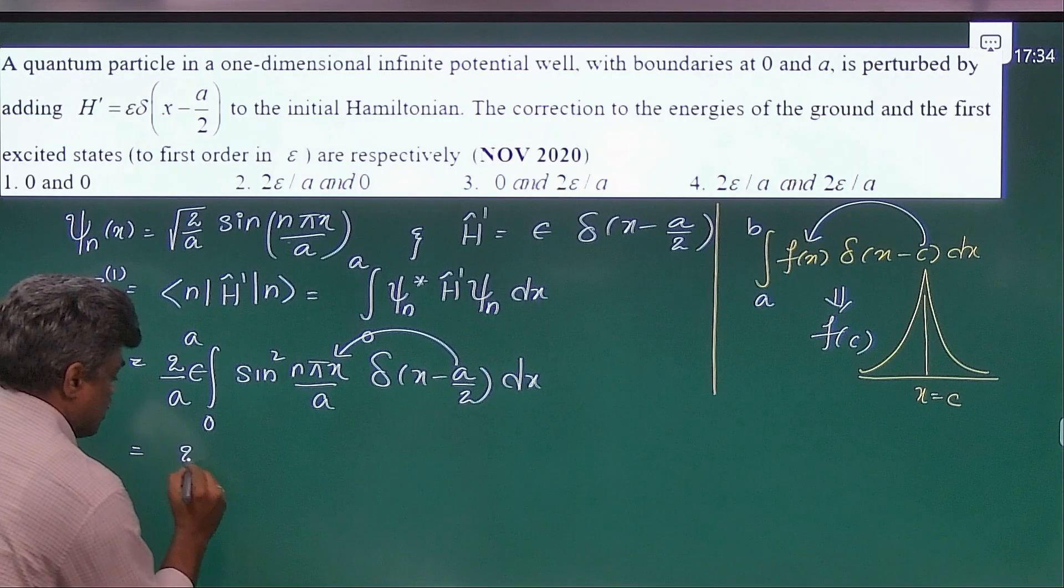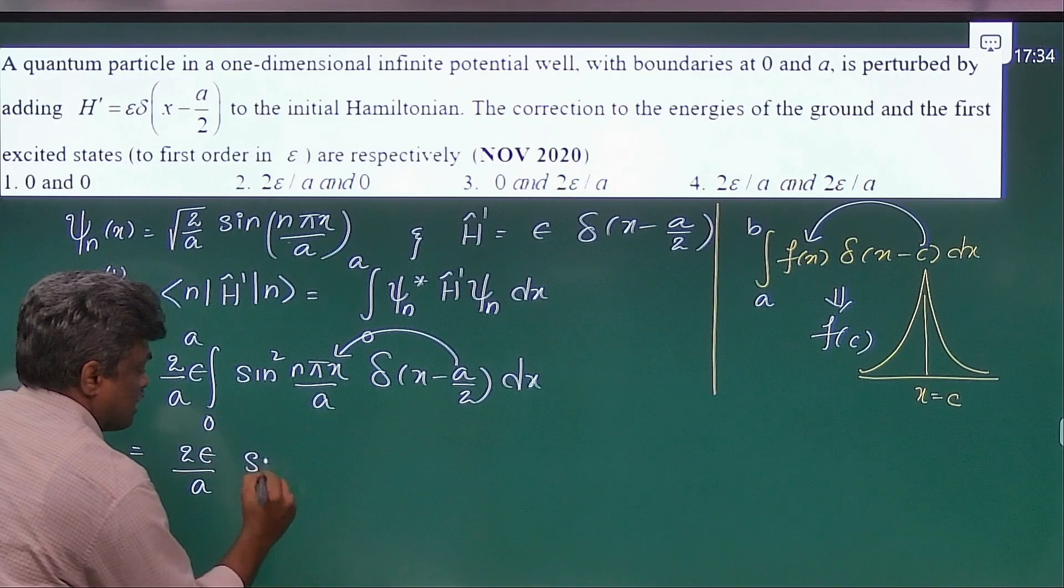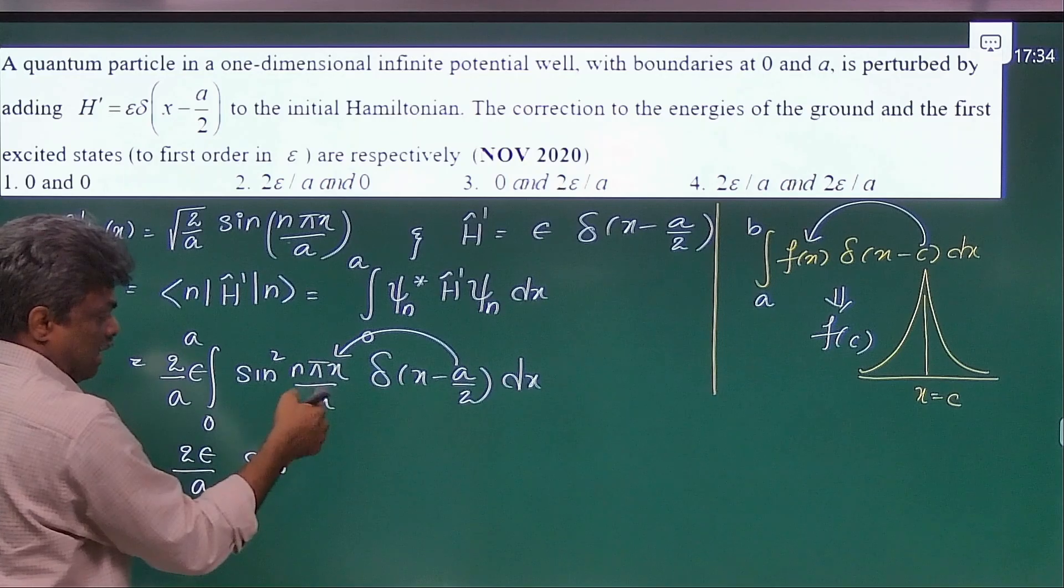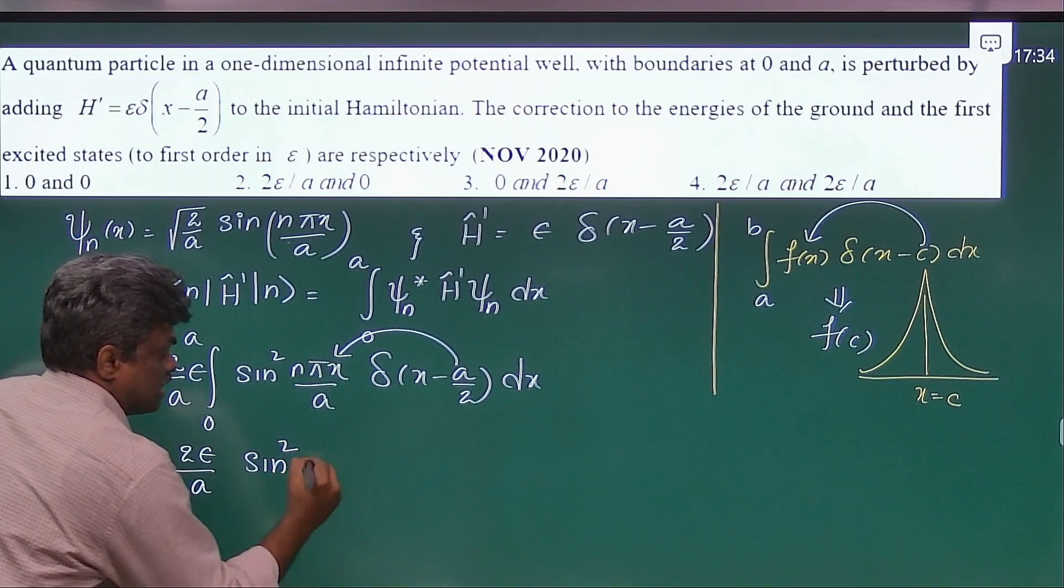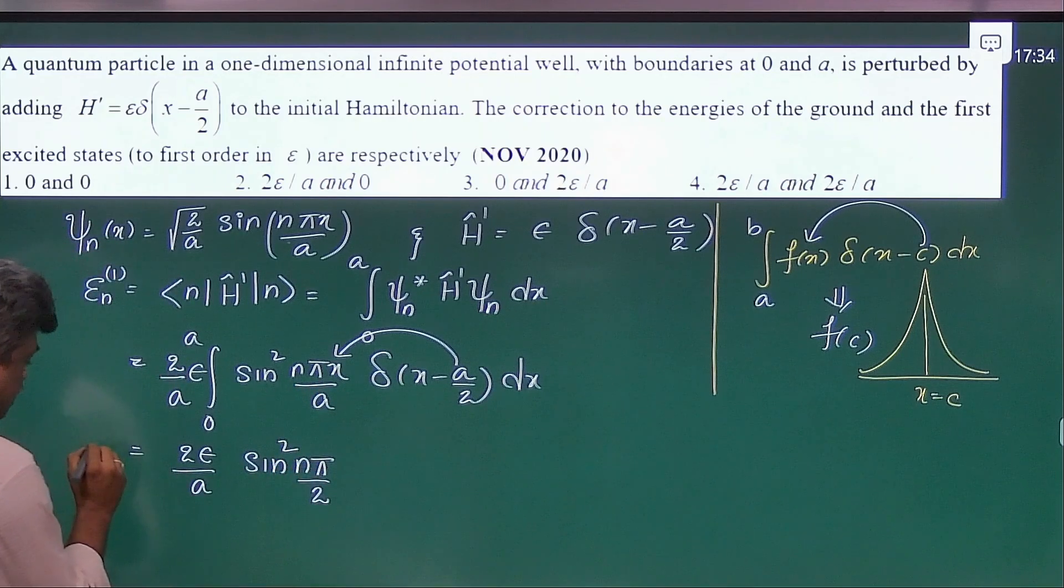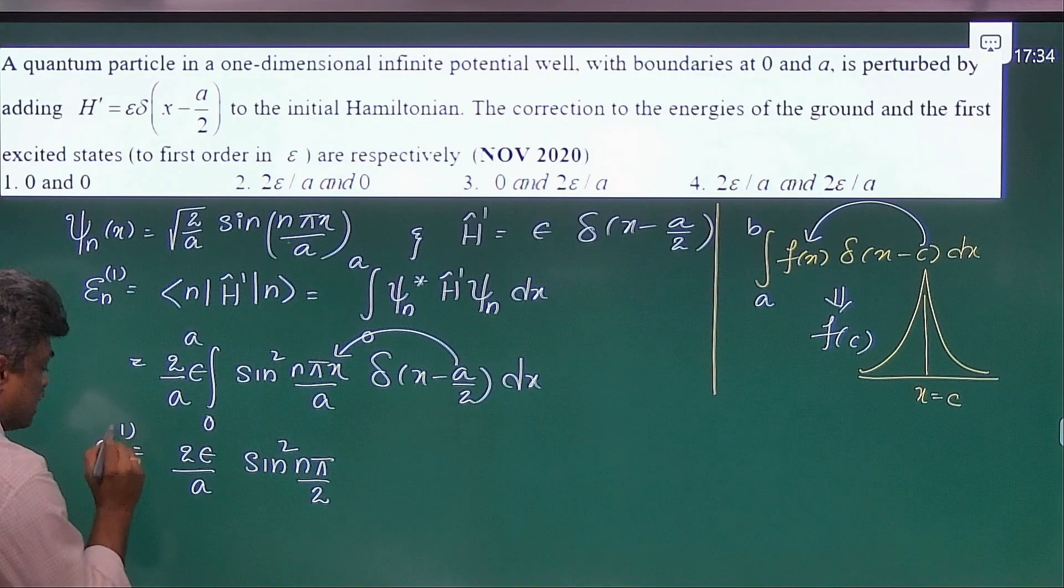So this is 2 epsilon by a, sin square n pi by 2. This is the first order correction to energy of nth state.